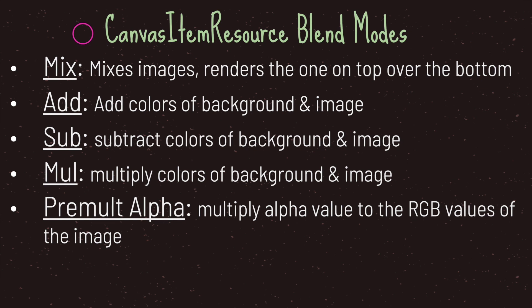Now you have five choices when it comes to blend modes: mix, add, subtract, multiply, and pre-multiply alpha. By default you are given the blend mode called mix. The blend mode mix renders one image on top of the other based on the ordering of your scene tree, if you have not changed any of the default values provided by the canvas item class properties.